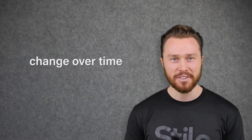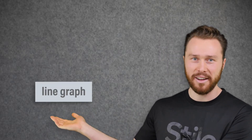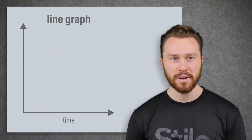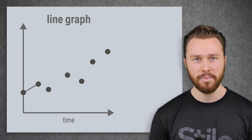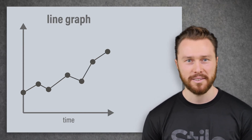The best way of visualizing change over time in a dataset is by making a line graph. We do this by plotting the data in the table as points and connecting the points by straight line segments.